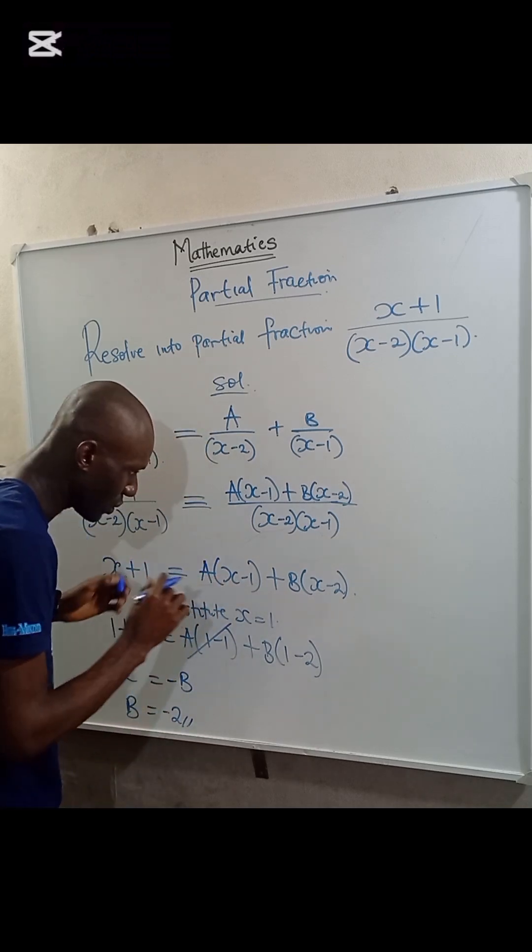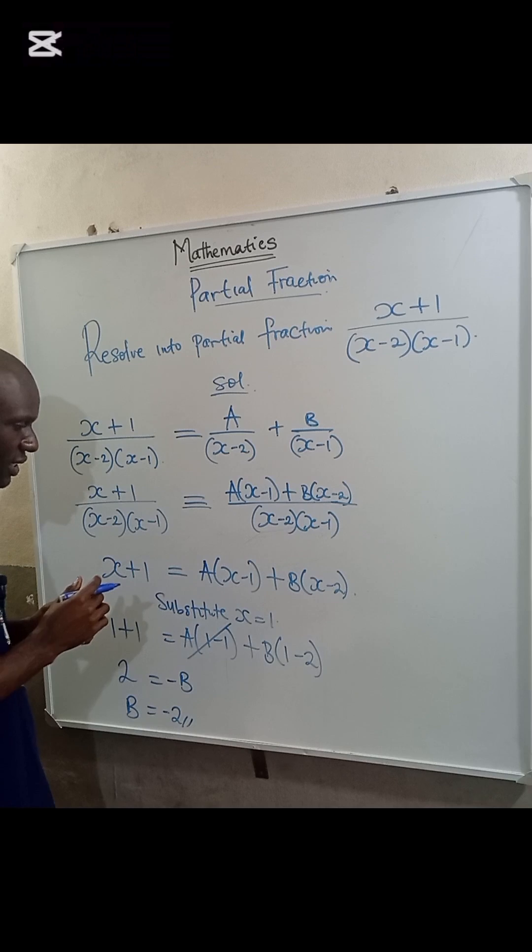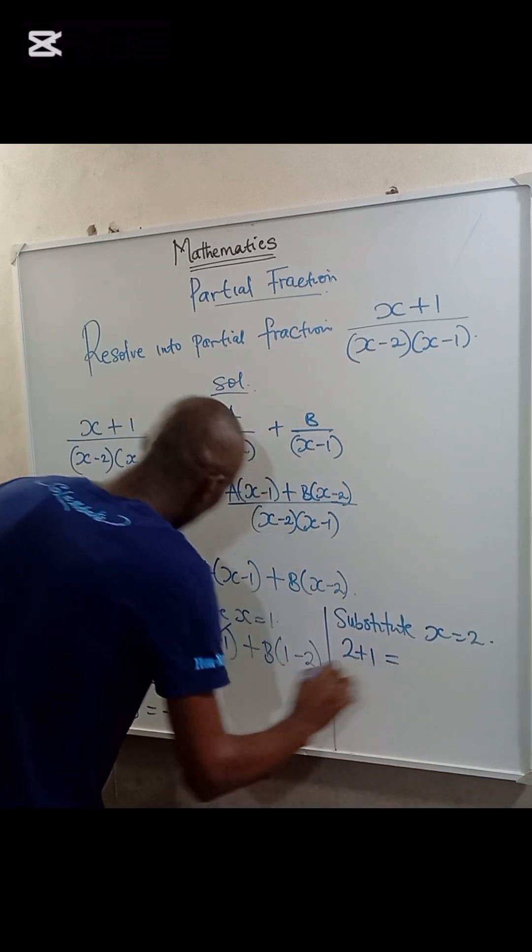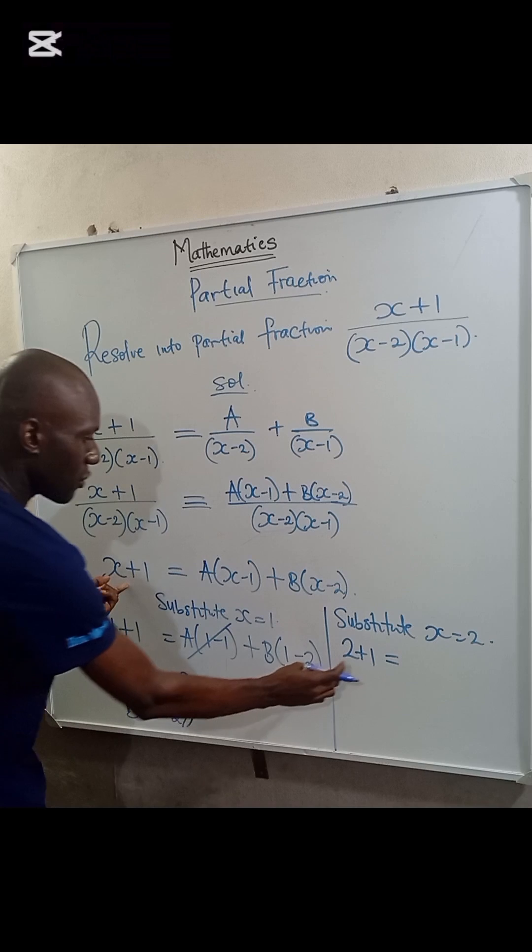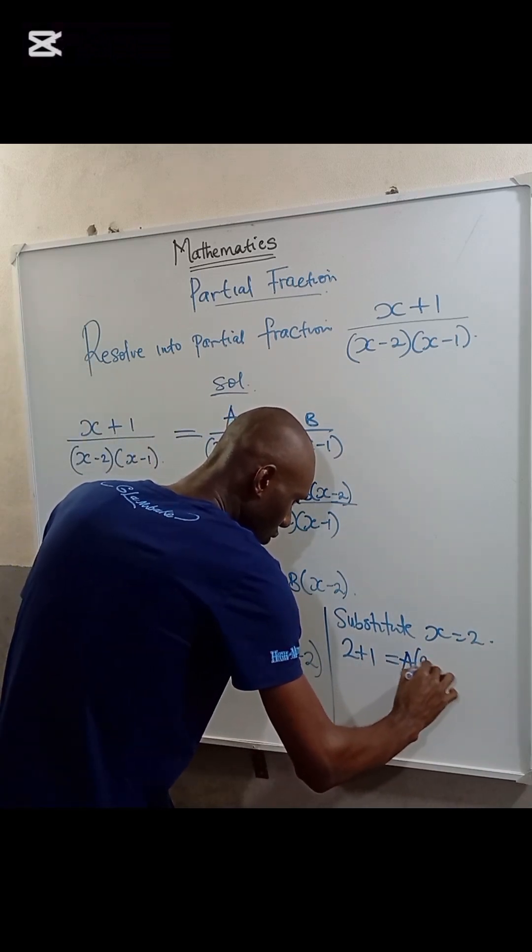If I substitute X equal to 2, I will eliminate B. So 2 times 2 plus 1 equal to, from this point here, I have 2 plus 1 equal to A from bracket 2 minus 1.